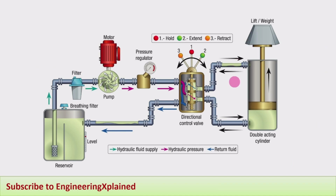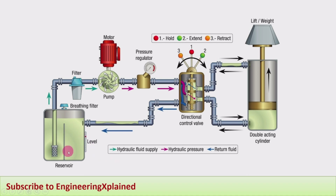In this system there are six main components, which I will discuss first, and later the other components will also be covered. The first one is the reservoir, which stores the required oil that will be circulated in the system and returned back to the reservoir.